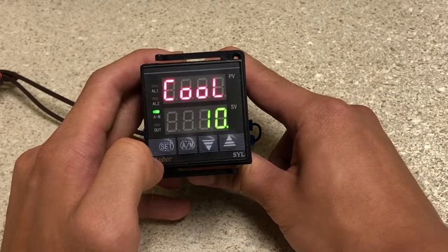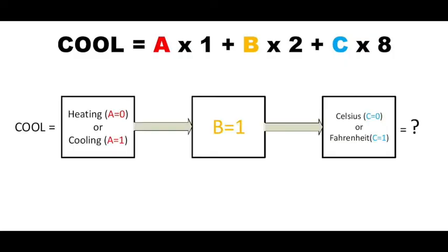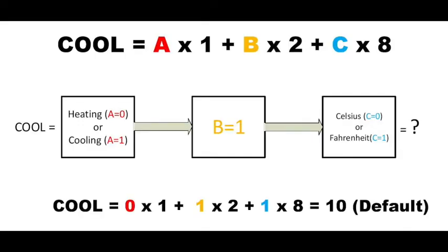COOL is a system function selection. The parameter is used to select your temperature display unit and heating or cooling mode. Its value is calculated by this formula: A equals 0 for heating mode, A equals 1 for cooling mode. C equals 0 for temperature display in Celsius degrees. C equals 1 for temperature display in Fahrenheit degrees. B can be either 0 or 1. It does not matter for this controller. The default value of COOL is 10 for heating mode and display unit in Fahrenheit. It's calculated by A equals 0, B equals 1, and C equals 1.